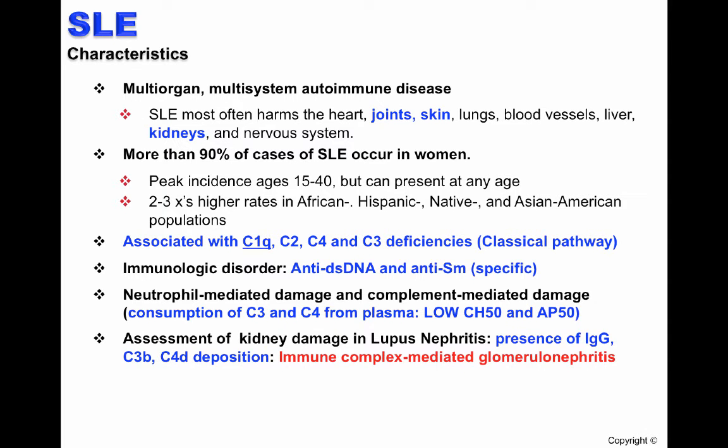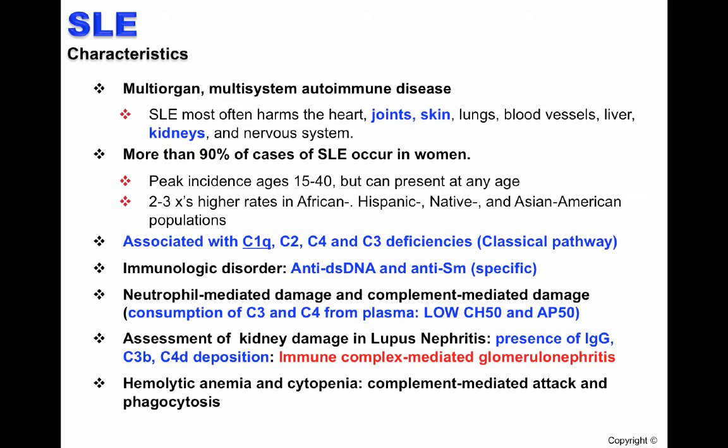In lupus nephritis, when the kidneys are affected, assessment of kidney damage is through the presence of IgG, C3B, or C4D deposition. Deposition of these leads to immune-complex-mediated glomerulonephritis. Some other major side effects of SLE include hemolytic anemia and cytopenia, which are due to complement-mediated attack and phagocytosis.